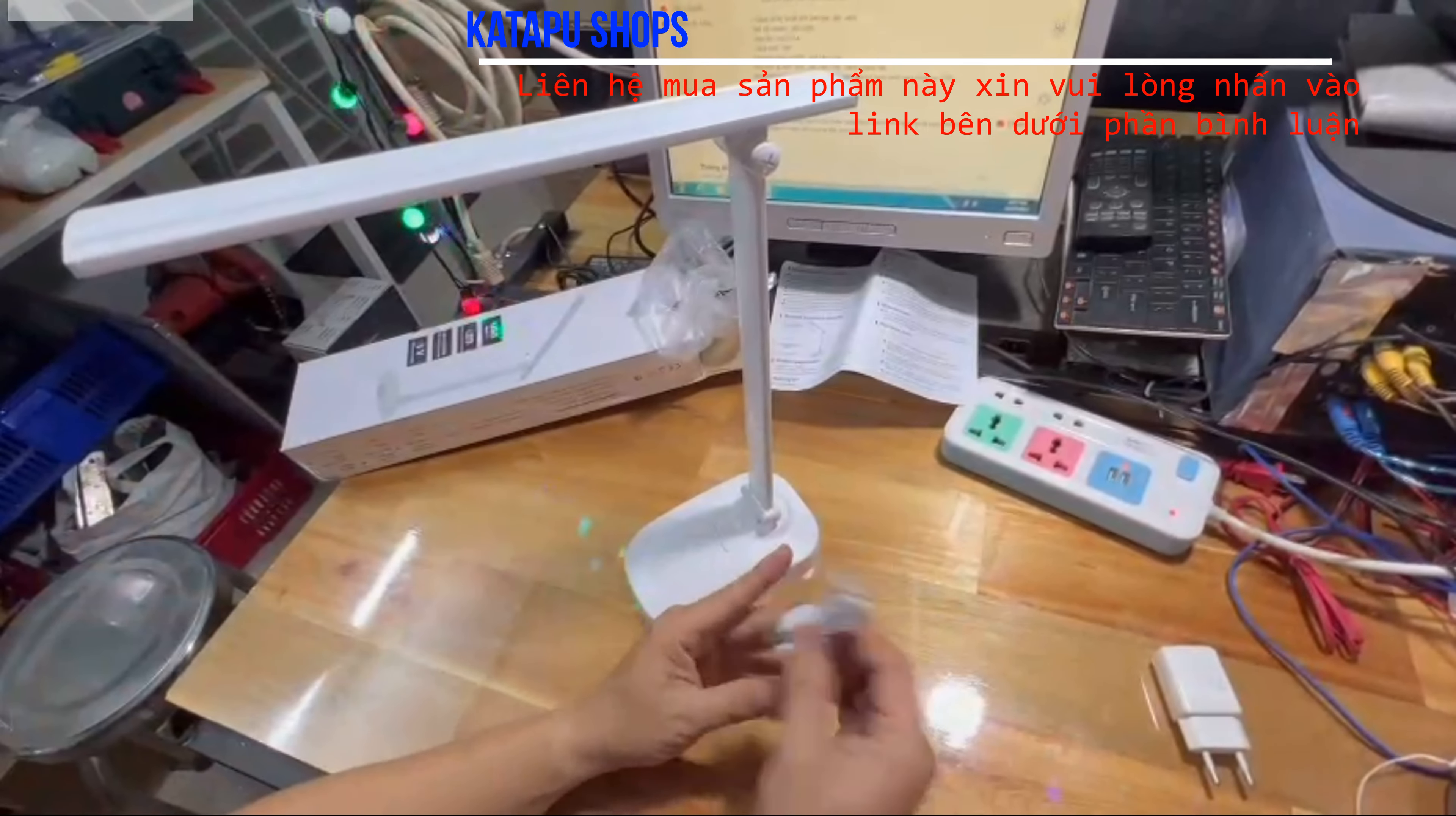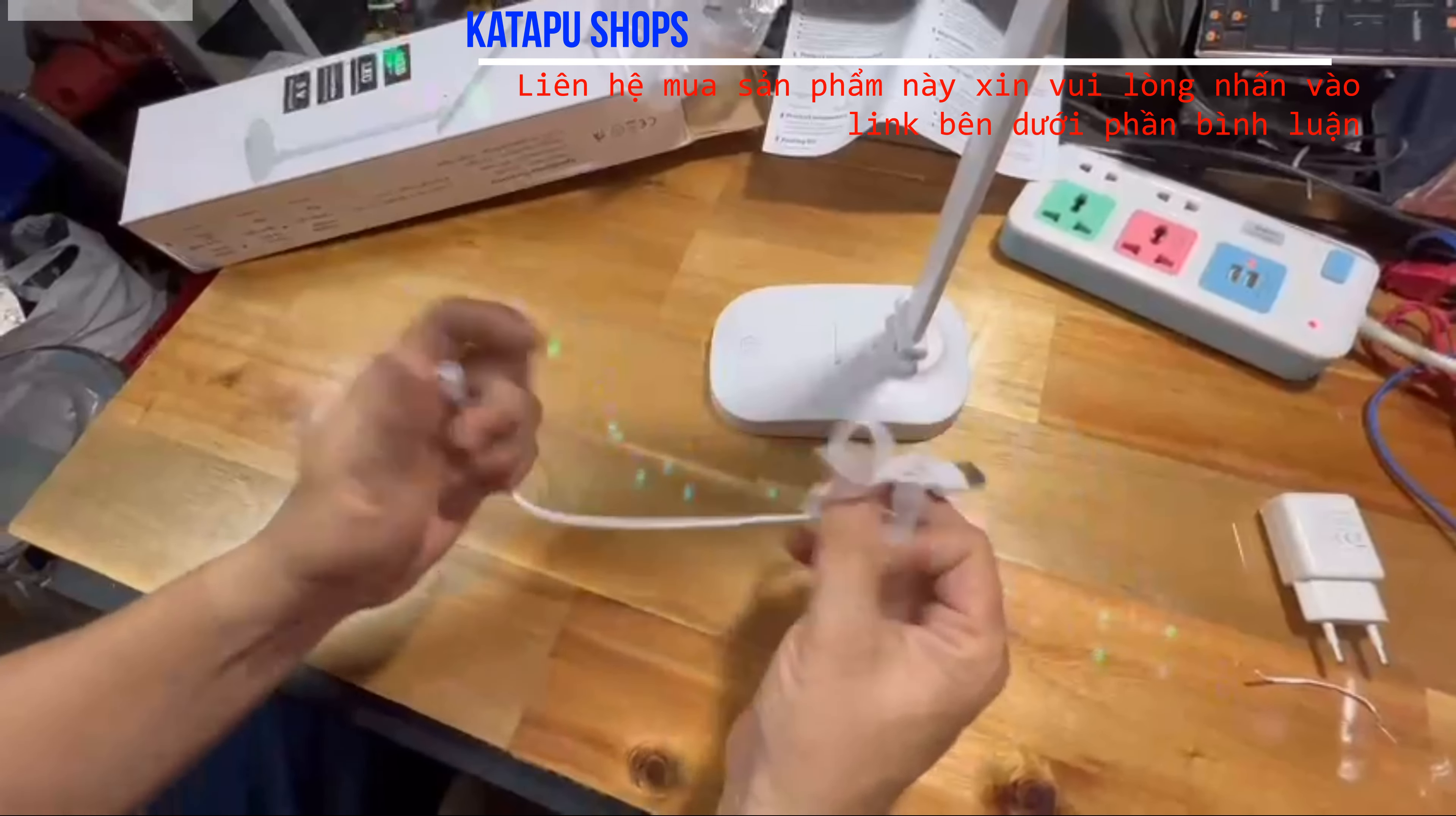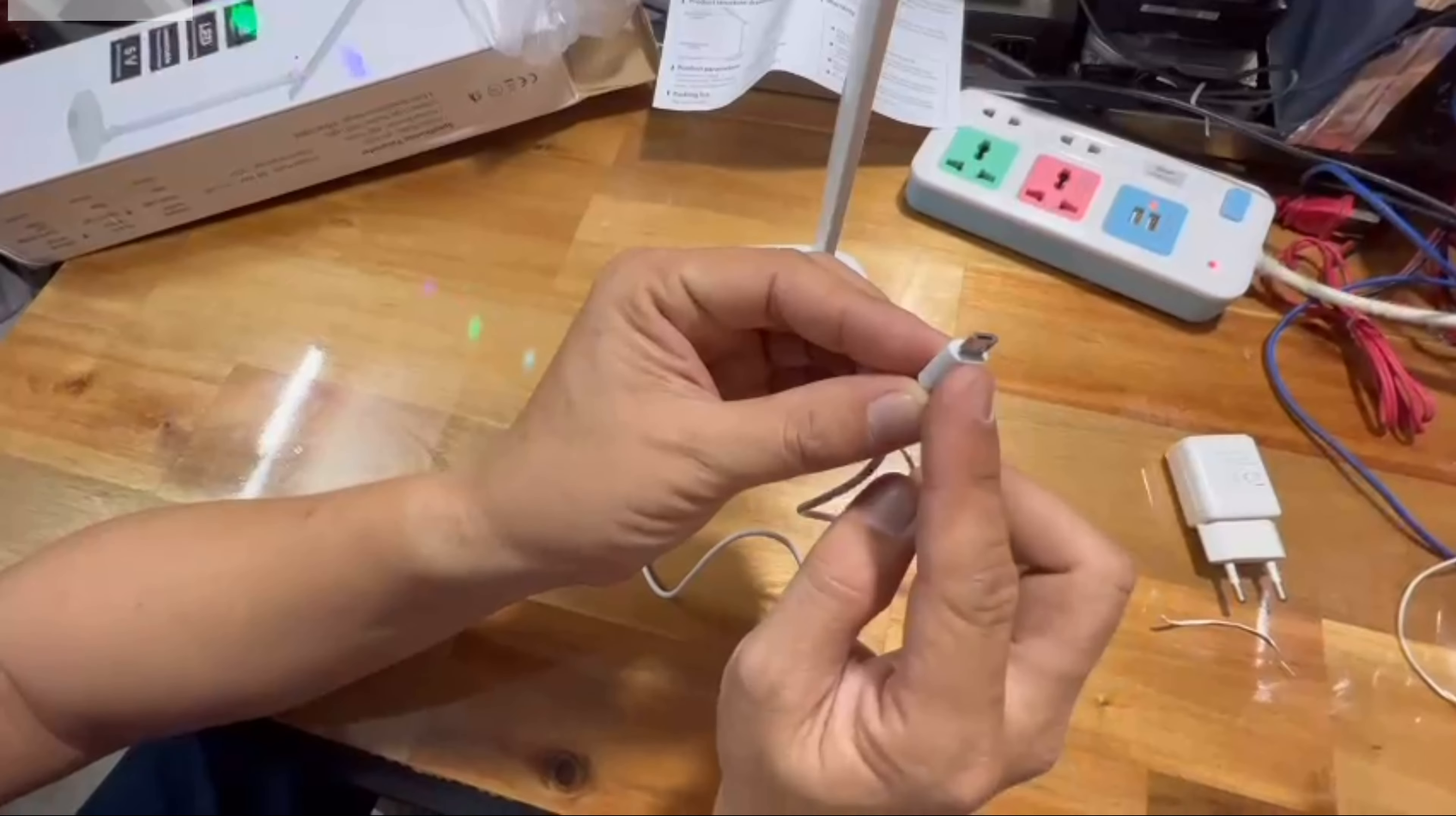Ở đây là cái dây cấp nguồn kèm theo cái đèn. Mình sẽ mở cái dây cấp nguồn ra. Đây là dây cấp nguồn, cái đầu này là đầu USB, cái đầu này là đầu cắm vào đèn.